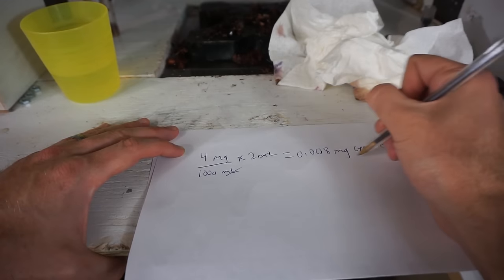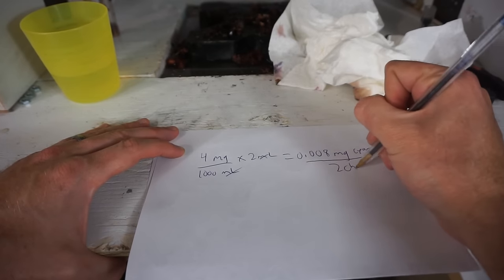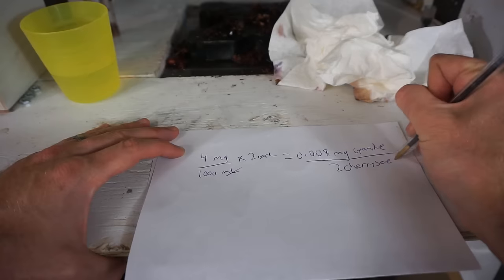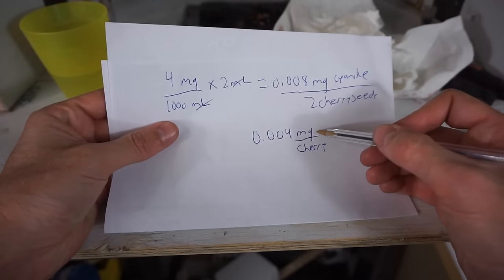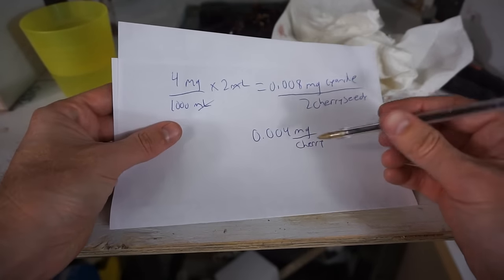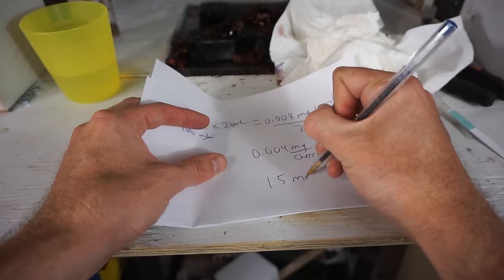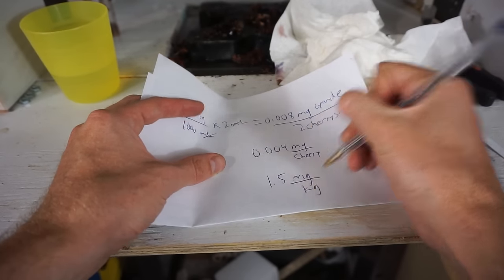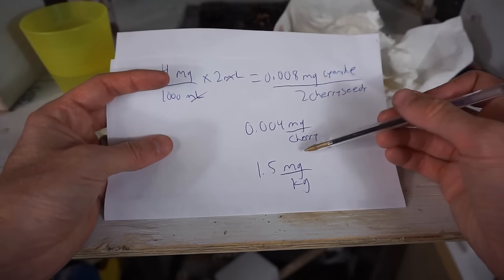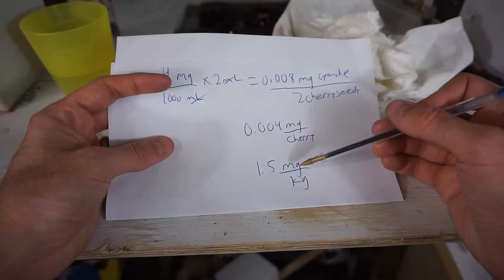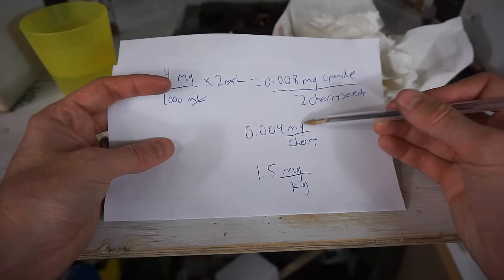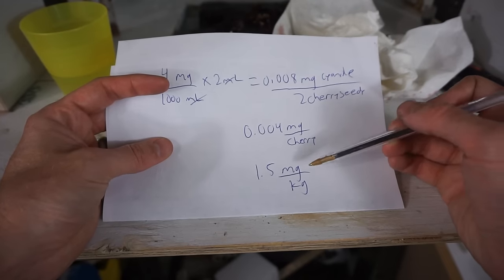And I had 2 cherry seeds to get that. So that is not a lot of cyanide. The lethal dose for a human is 1.5 milligrams of cyanide per kilogram of body weight. So even if I only weighed a kilogram, this 0.004 milligrams of cyanide would not kill me.